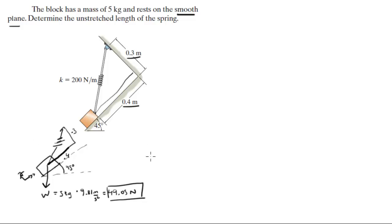So with this triangle, let me redraw the triangle right here. This is 0.4 and this is 0.3. This hypotenuse, let's call it x. You know that 0.4 squared plus 0.3 squared is equal to x squared. So x is going to be equal to 0.5 meters.